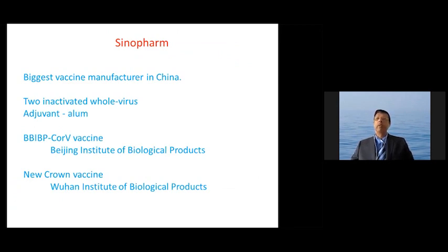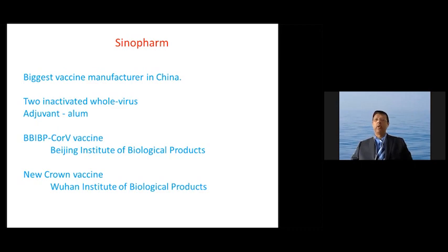Sinopharm is the biggest vaccine manufacturer in China. They have brought forward two inactivated whole virus vaccines, where the virus is taken, killed, and inactivated, and then injected. Because the immune response may not be too great with an inactivated virus, you do need an immune boost — an adjuvant. The adjuvant used is aluminum hydroxide, or alum. The two vaccines are produced by the Beijing Institute of Biological Products and the Wuhan Institute of Biological Products.